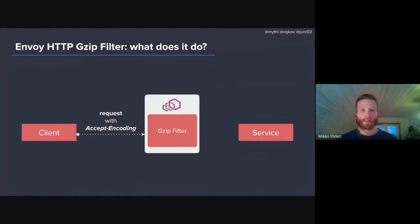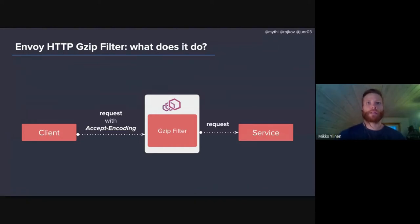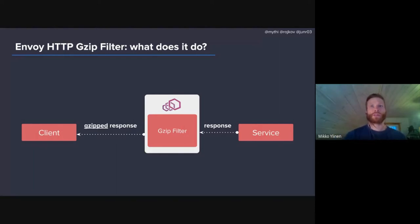Let's take a look at what the HTTP GZIP filter in Envoy does. On the request path on the left-hand side, the client sends a request, and the filter on Envoy looks for a matching GZIP Accept-Encoding header. The filter deletes it and forwards the request to the upstream service. When the filter receives the response data, it compresses the data using the GZIP algorithm, and then Envoy proxies the GZIP response back to the client.